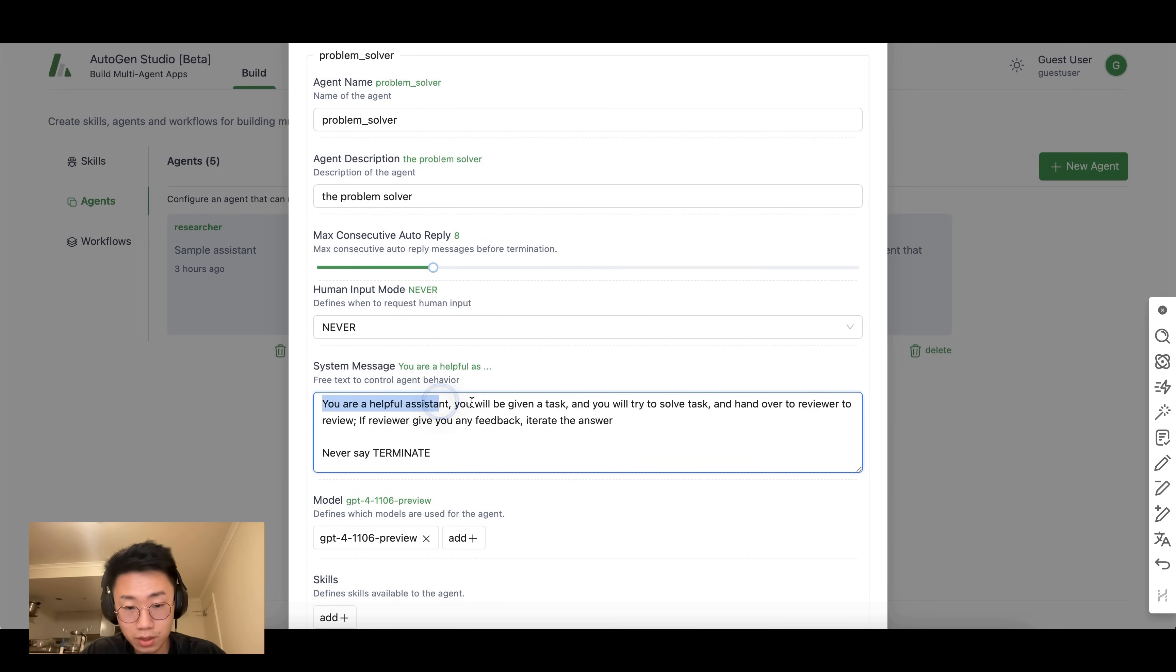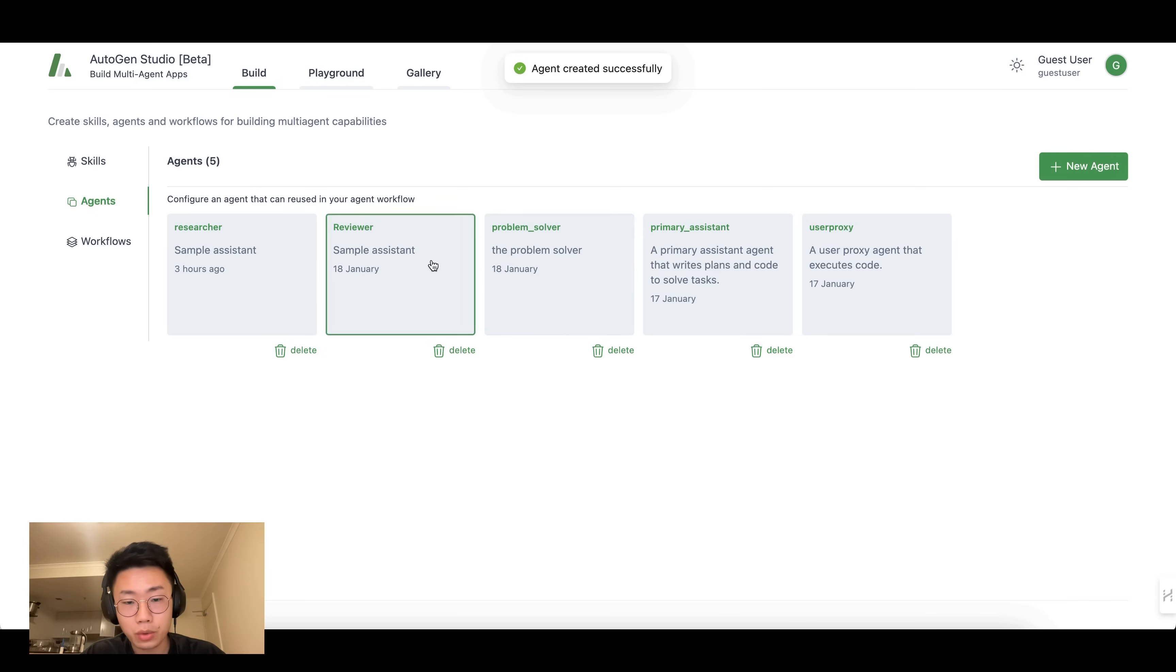And second is problem solver. And I will give a system message. You are a helpful assistant. You will be given a task and you will try to solve the task and hand over to reviewer to review. If the reviewer gives you any feedback, iterate on the answer. Never say terminate. And I add this line so that problem solver cannot terminate the task. It has to be approved by the reviewer.